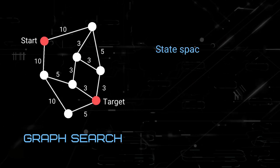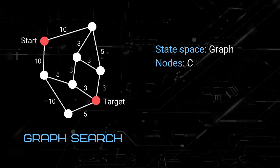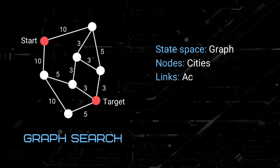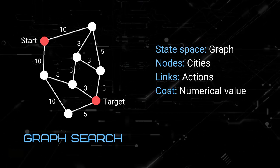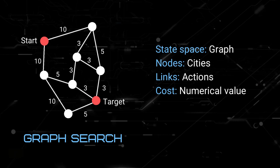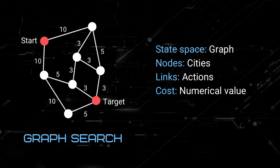In a graph state-space, the nodes are the cities which are shown as circles in the example. The links or lines are the actions, while the cost is the numerical value shown in the graph.